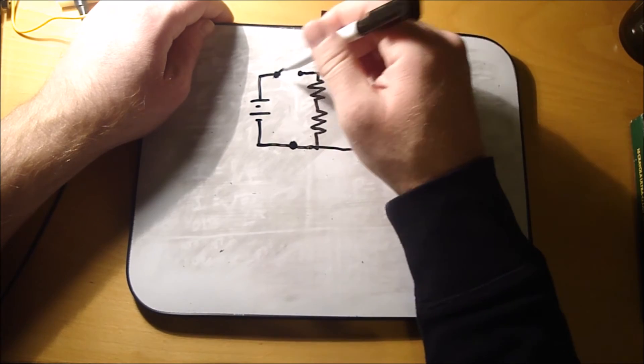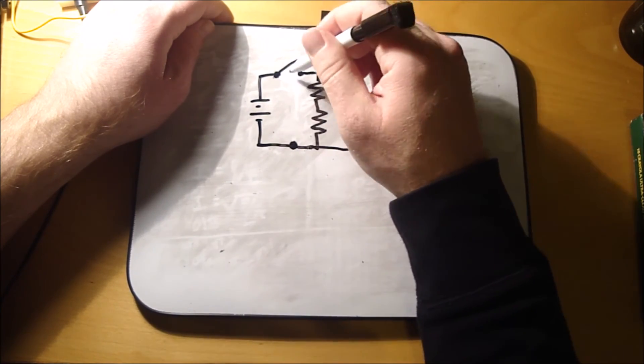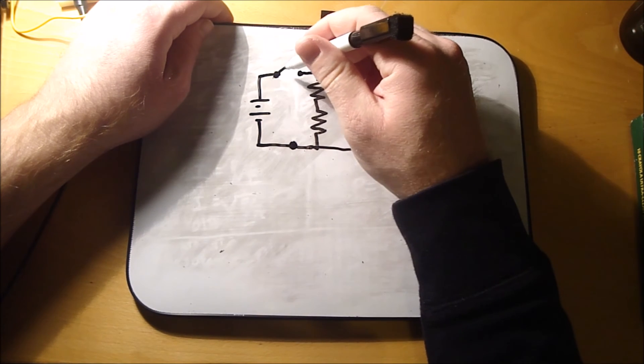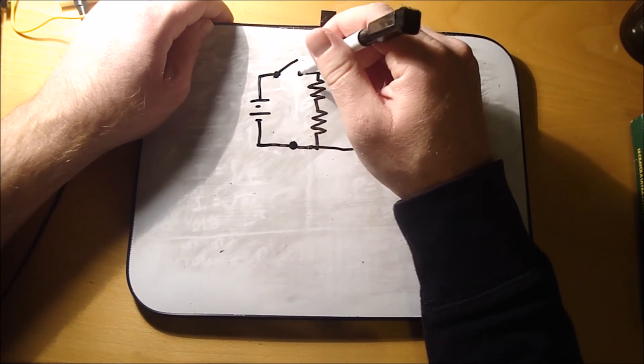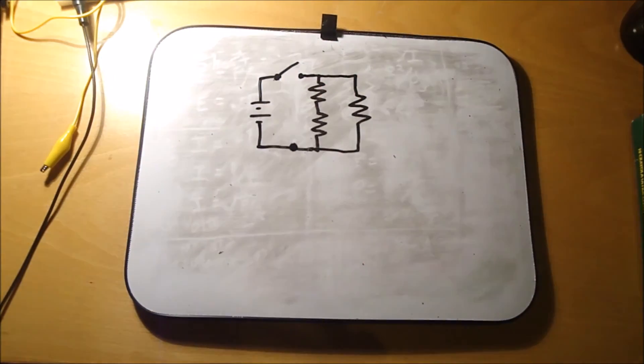When you close it, it shorts the circuit out. It just creates a short across the switch. And then when you shut the switch off, then it creates an open in the circuit. And then the lights shut off, or power to the circuit shuts off.